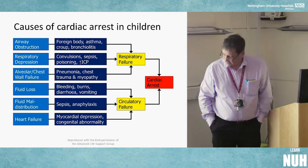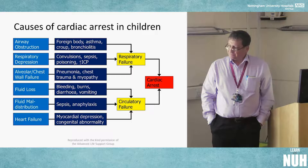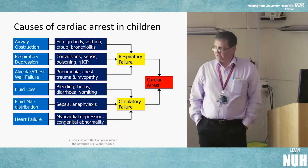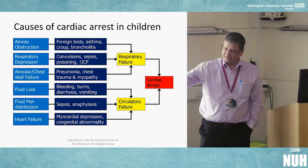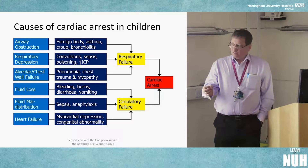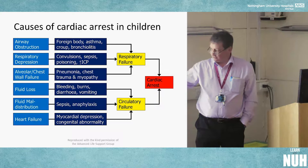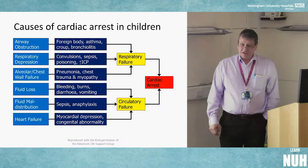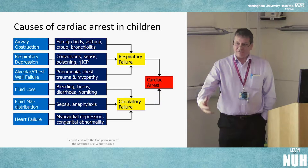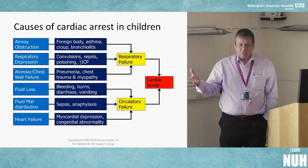This slide has been kindly borrowed and reproduced by ALSG from APLS. Some of the airway obstruction content Sonia touched on earlier. Essentially in kids, we want to intervene on the left-hand side of the slide — when things first start to go wrong — to either halt or slow progression. If we end up on the right-hand side with respiratory or circulatory failure, or worse, cardiac arrest, the outcomes are really not going to be good.